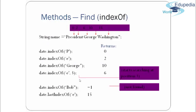Another important method is indexOf(). For example, date.indexOf('p') returns the index of 'p'. You can also search for a string like "George". Using indexOf('e', 3) starts searching from position 3. If the search term is not found, it returns -1. You can also use lastIndexOf() to get the last index of a character — for example, lastIndexOf('e') returns 15.